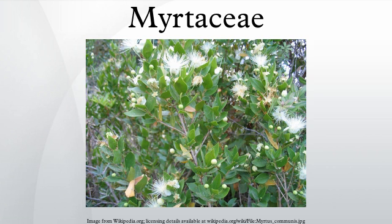Eucalyptus is a dominant, nearly ubiquitous genus in the more mesic parts of Australia and extends north sporadically to the Philippines. Eucalyptus regnans is the tallest flowering plant in the world. Other important Australian genera are Callistemon, Syzygium, and Melaleuca. Species of the genus Osbornia, native to Australasia, are mangroves.